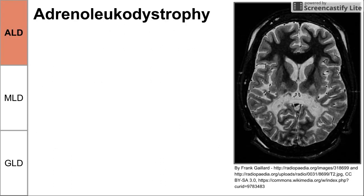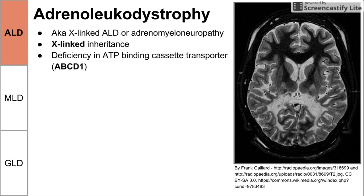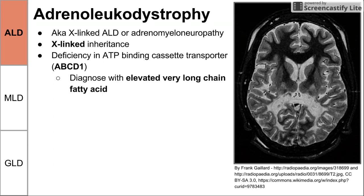Let's begin with adrenoleukodystrophy. Adrenoleukodystrophy is also called X-linked ALD, X-ALD, or adrenomyeloneuropathy. As its name implies, it has X-linked inheritance. It's caused by a deficiency in an ATP binding cassette transporter called ABCD1 — that's the protein name worth associating with X-linked adrenoleukodystrophy. Because of this faulty transporter, we can diagnose ALD with elevated very long chain fatty acids.